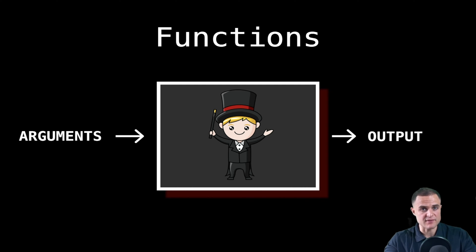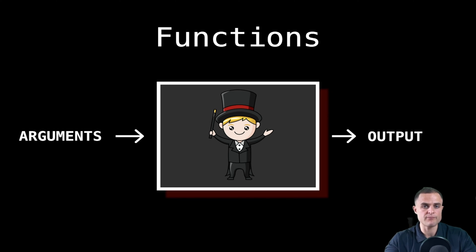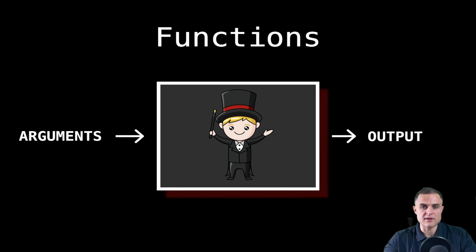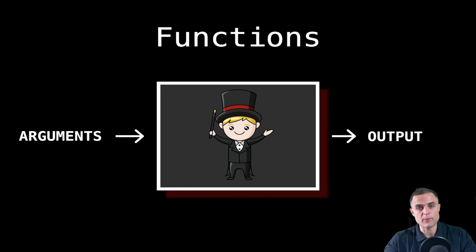Inside the function happens something that I can know or cannot know. The really important part is that I know the inputs and the outputs. In our specific case, the write function is a black box for us. It has been defined and implemented by some other programmers, and we personally just want to use it in our code.